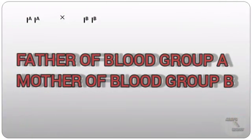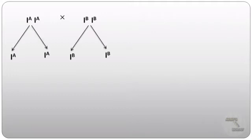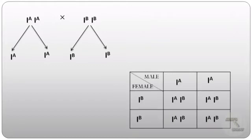Now let us predict the blood group of a child whose father has blood group A and mother has blood group B. If both parents are homozygous — meaning the father has genotype IᴬIᴬ and the mother has genotype IᴮIᴮ — then from the father we get alleles Iᴬ and Iᴬ, and from the mother we get alleles Iᴮ and Iᴮ. From the Punnett square, we can see that all offspring will have blood group AB. This proves that if the parents are homozygous and one has blood group A and the other has blood group B, they will produce offspring with blood group AB.